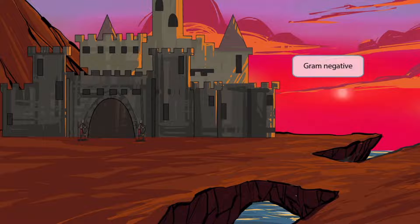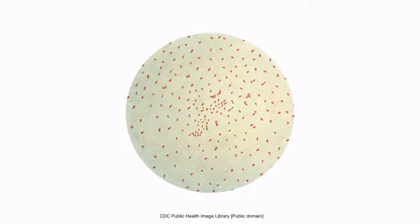Pay attention to the background — we've intentionally made it red and pink to help you remember that Bordetella is a gram-negative organism. This is a gram stain of Bordetella. Notice that the organism is red or pink appearing, and in some areas it appears circular or coccus-shaped, and in other areas it looks a bit more rod or bacilli-shaped. This is why Bordetella is considered a gram-negative coccobacillus.